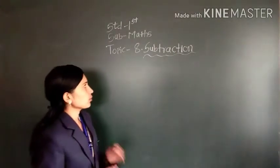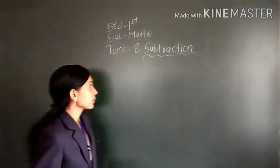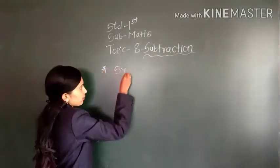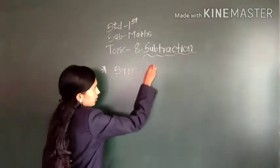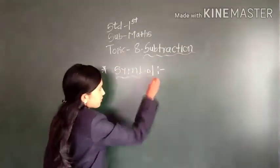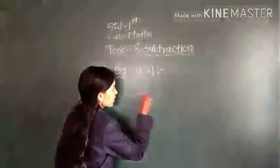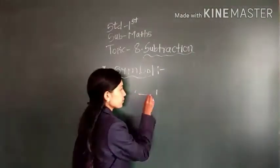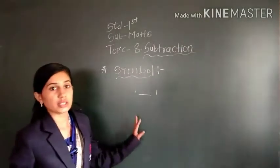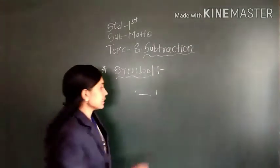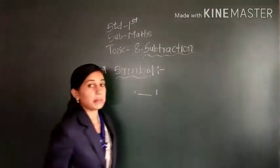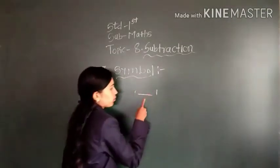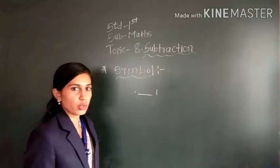First we have to introduce the subtraction. What is the symbol for subtraction? This is the symbol of subtraction. This is also called the minus sign. We read it as minus. This is the minus sign, or symbol of subtraction.